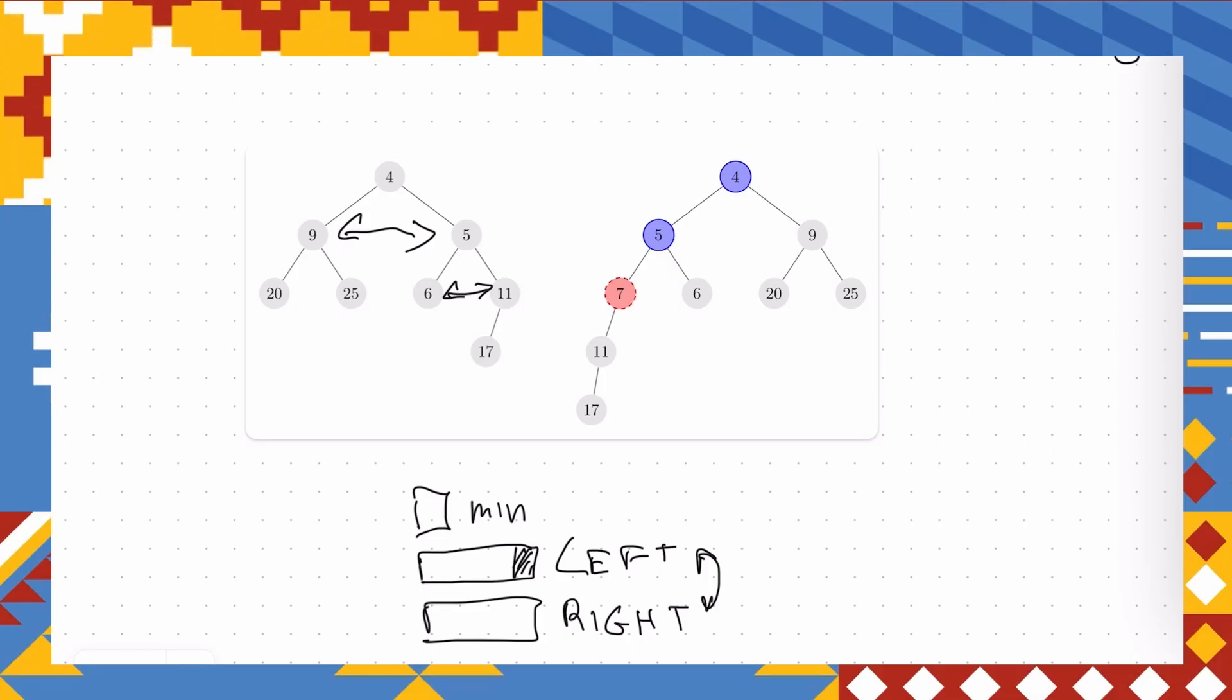We have three options how this can happen. First of all, we can run out of left elements in the left subtree to remove. This is impossible because we can never achieve the situation where we have right subtree but no left subtree.